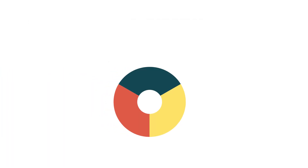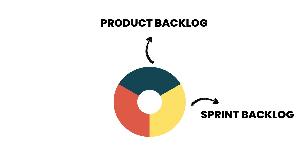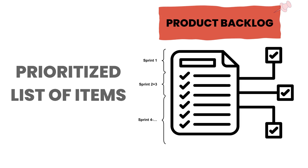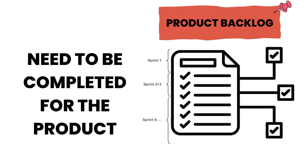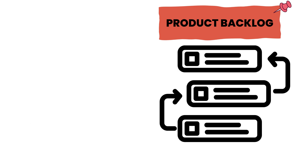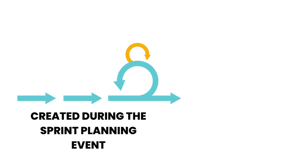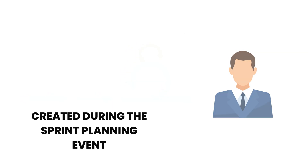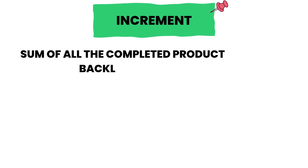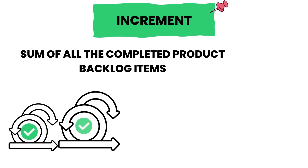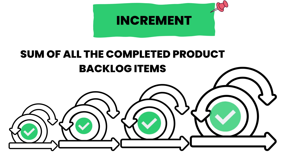Let's move on to Scrum Artifacts. Scrum has three primary artifacts — the product backlog, the sprint backlog, and the increment. The product backlog is a prioritized list of items that need to be completed for the product; it's constantly evolving and changing as new information becomes available. The sprint backlog is a plan for how the development team will accomplish the work for the current sprint, created during the sprint planning event and owned by the development team. The increment is the sum of all the completed product backlog items at the end of a sprint and should be a potentially releasable version of the product.